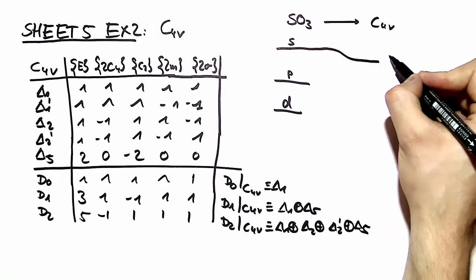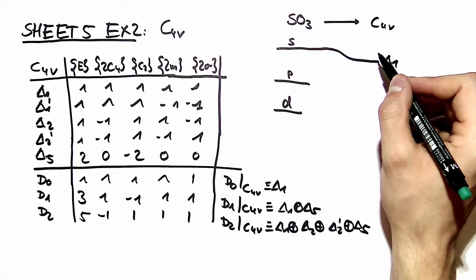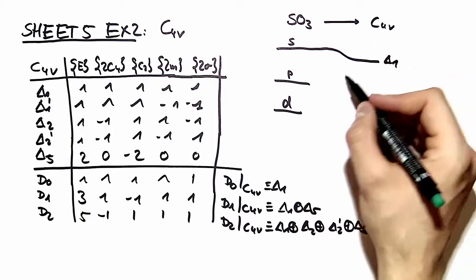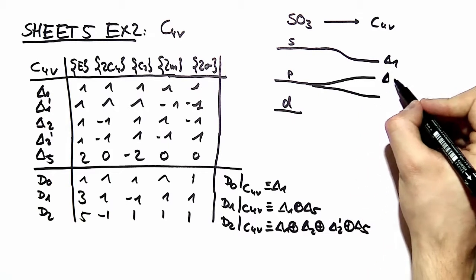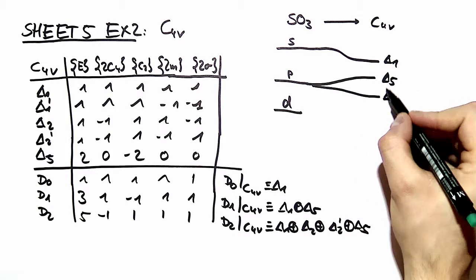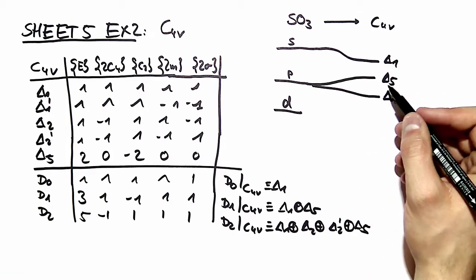The s orbital moves to the delta 1 irreducible representation. The p orbital splits into delta 5 and delta 1. Again, the order of this is not clear from group theory.